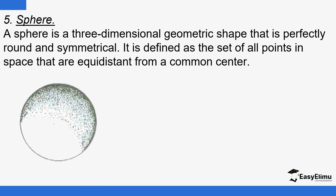We have a sphere — a three-dimensional geometrical shape that is perfectly round and symmetrical. When we say symmetrical, we mean you are able to find a plane that can divide it into two equal and similar parts. This plane is called a plane of symmetry. What makes an object symmetrical is when you are able to divide it into two equal and similar parts where the left-hand side and the right-hand side are equal in size and shape.